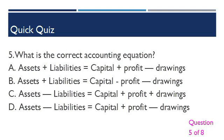Question 5: What is the correct accounting equation? A. Assets plus liabilities equals capital plus profit less drawings. C. Assets less liabilities equals capital plus profit plus drawings. D. Assets less liabilities equals capital plus profit less drawings.